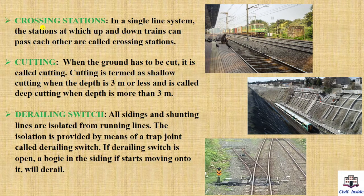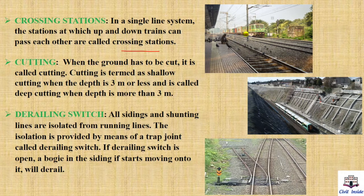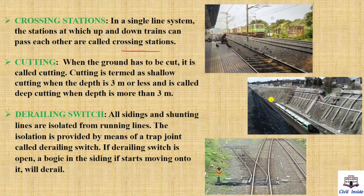Next, crossing stations. In a single-line system, the stations at which up and down trains can pass each other are called crossing stations — stations where trains can come from both sides. Next, cutting. When the ground has to be cut for laying track, it is called cutting. It is termed shallow cutting when the depth is 3 meters or less, and deep cutting when the depth is more than 3 meters.